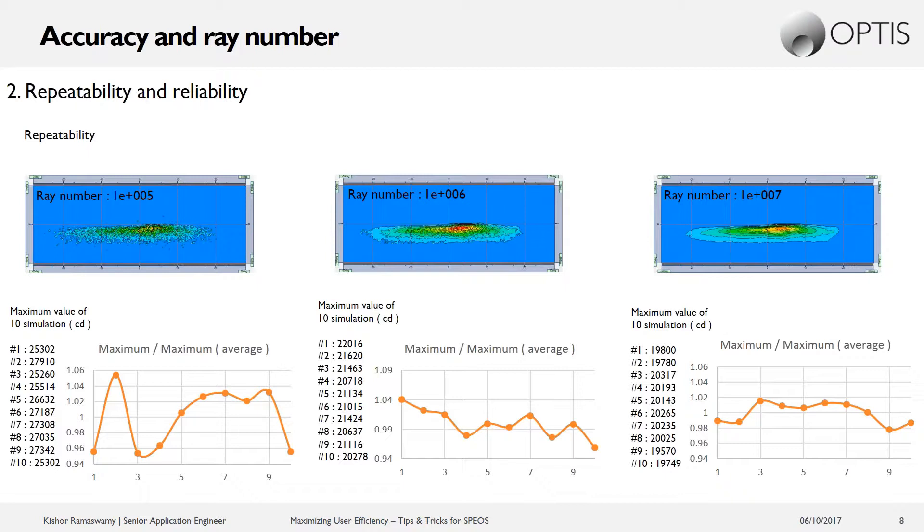So you can see here, if we run a simulation with 10,000 rays, so the far left, the maximum value in the result actually has quite a large variation. So it can change from as high as about 27,000 in this case, to as low as about 25,000. In this case, we're looking at a headlamp for the Candela output. That is quite a large variation for simply re-running the exact same simulation.